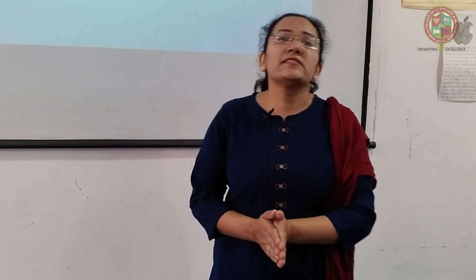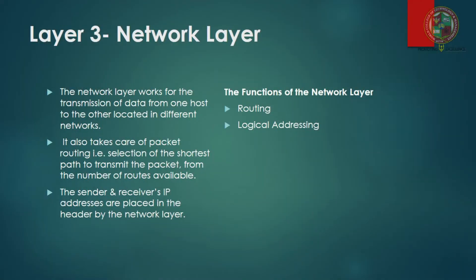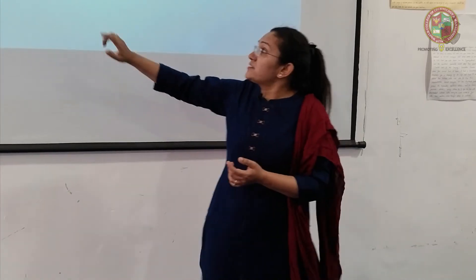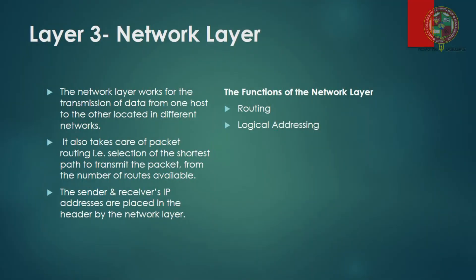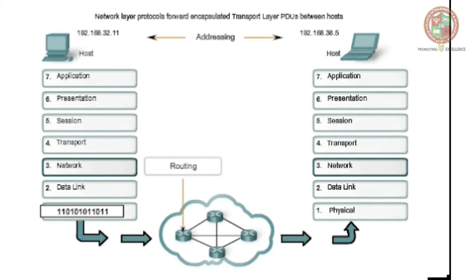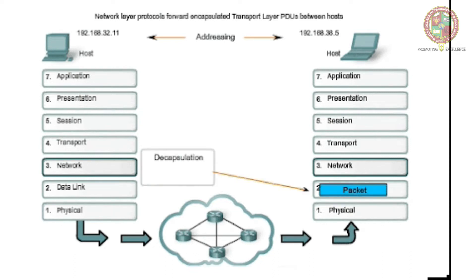Layer three is the network layer, which is the most important lower layer. It is used to send data using routers and handles routing of data received from the transport layer down to the data link layer. The main device used is the router, which has its own IP address. Both sender and receiver have their own IP addresses, making it easy to route data between systems.